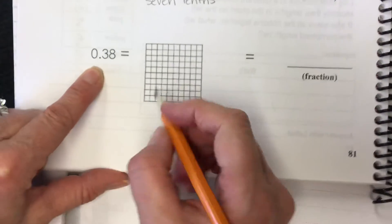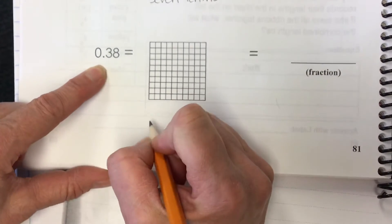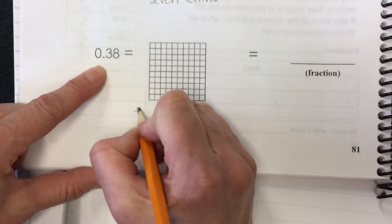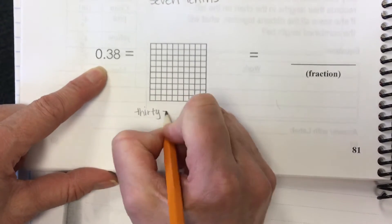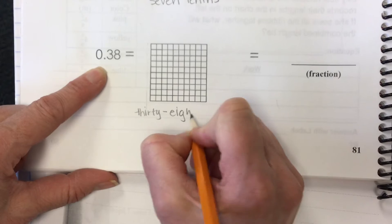This one, how do we say this number? How do we say this number? Gauge? Thirty-eight hundredths. Thirty-eight hundredths.